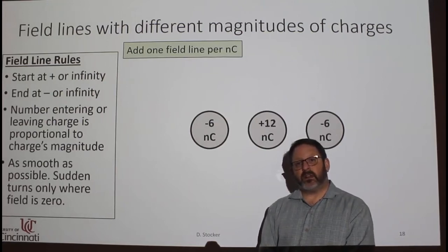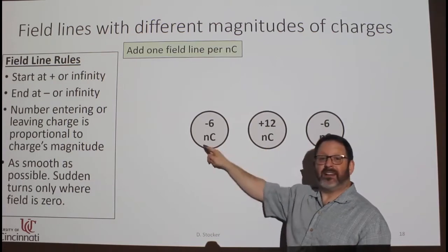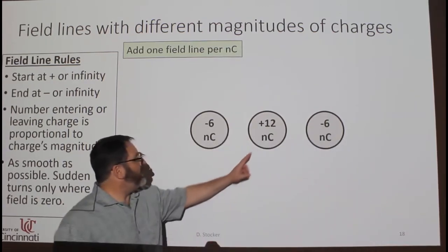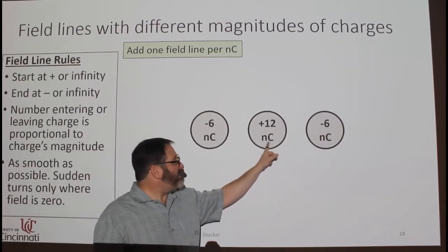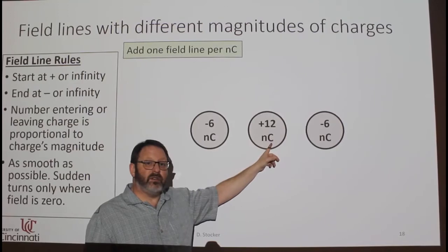In this video, I will demonstrate drawing electric field lines when there are charges with unequal sizes. In this case, we have plus 12 nC. This is nano coulombs. Coulomb is the unit of charge.